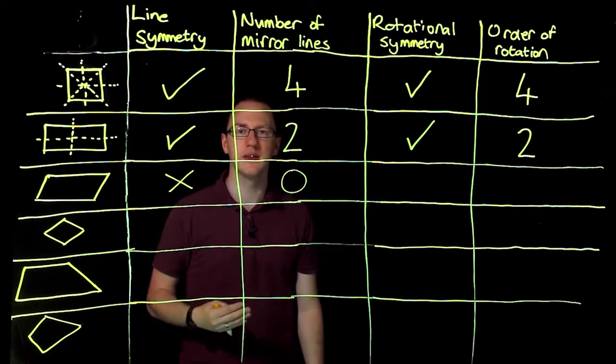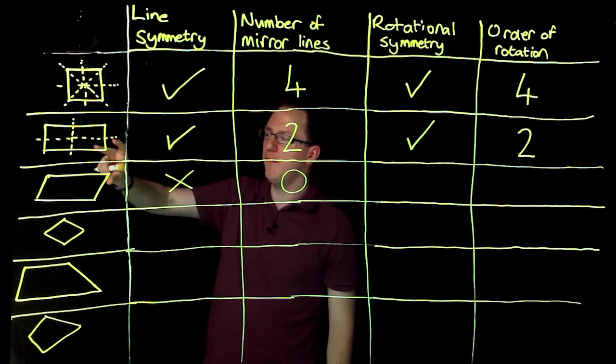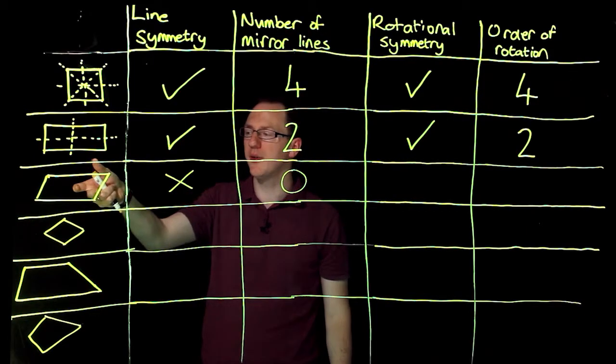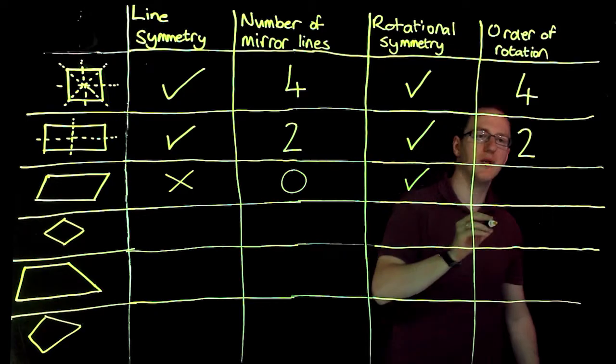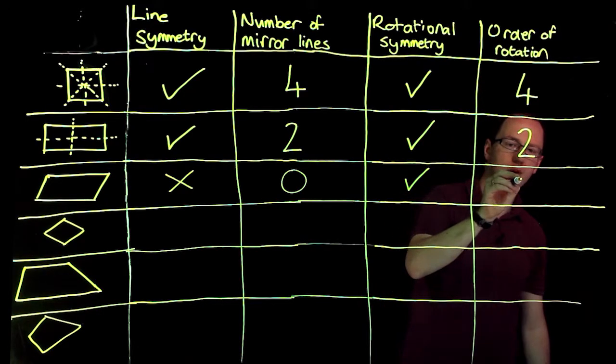In terms of rotational symmetry, a parallelogram will fit inside itself at 180 degrees and 360 degrees. So it does have rotational symmetry of order two.